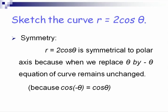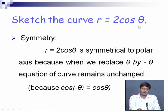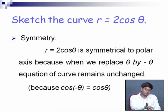First example: sketch the curve r=2cosθ. Starting with symmetricity: since if we replace θ by -θ in the equation r=2cosθ, we get cos(-θ)=cosθ back, so the equation remains unchanged. Therefore, the given curve is symmetrical to the polar axis.